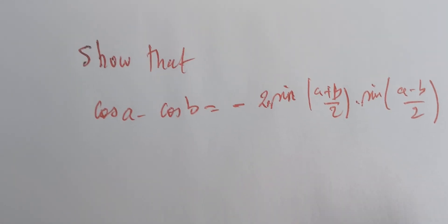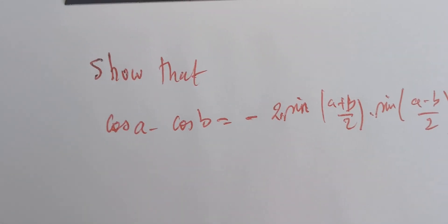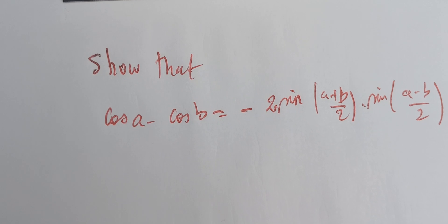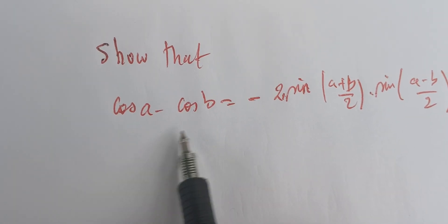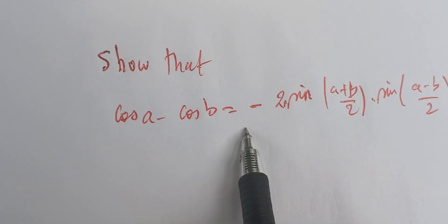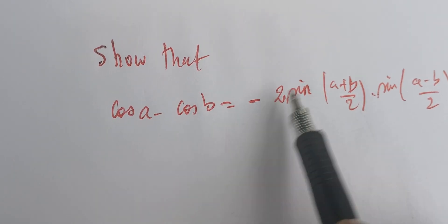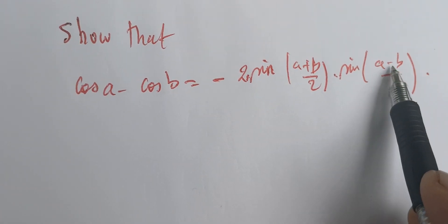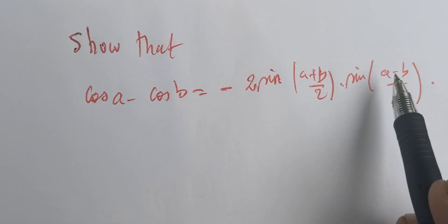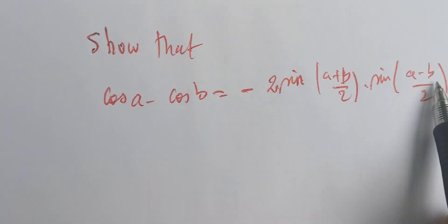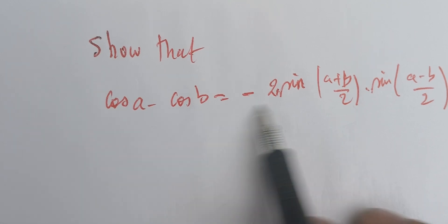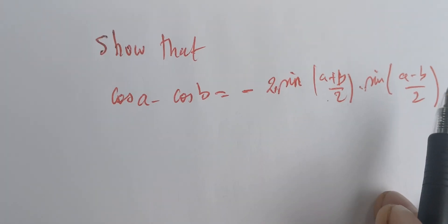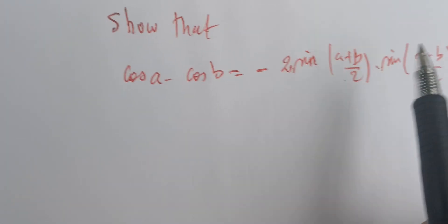We're going to prove the following result concerning the difference of cosines: cosine of a minus cosine of b equals minus 2 sine of (a+b)/2 times sine of (a-b)/2. This is a very useful identity, particularly when trying to solve equations.